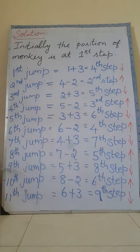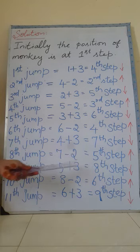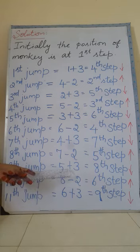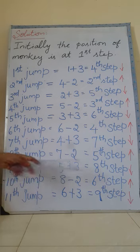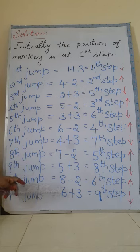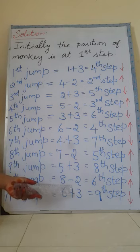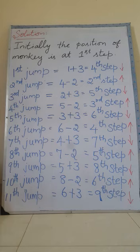Now move to the ninth jump. The eighth jump of the monkey is the fifth step, so five plus three equals the eighth step. Tenth jump: the ninth jump position is at the eighth step. He moves two steps back, so minus two. The position of the monkey is the sixth step for the tenth jump.